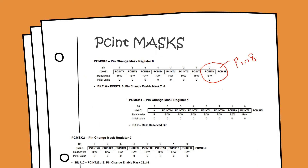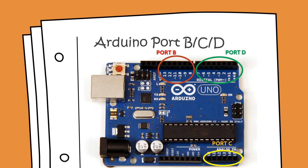Similar to pin change mask register 0, we have pin change mask register 1 and pin change mask register 2, and obviously they would correspond to ports B, C, and D respectively.